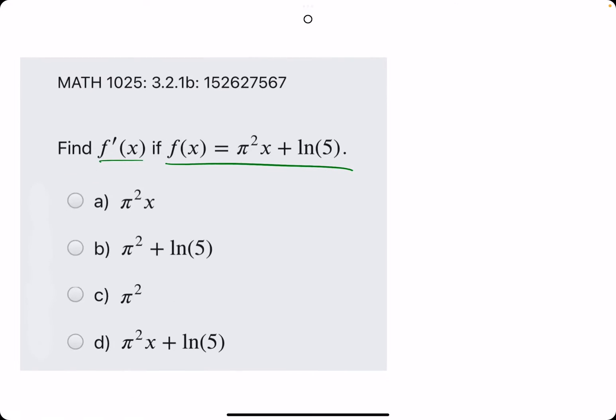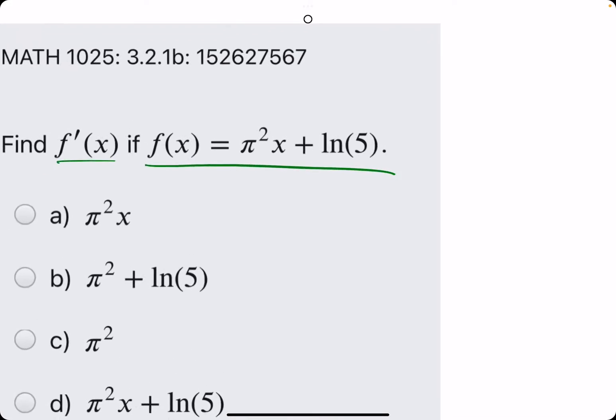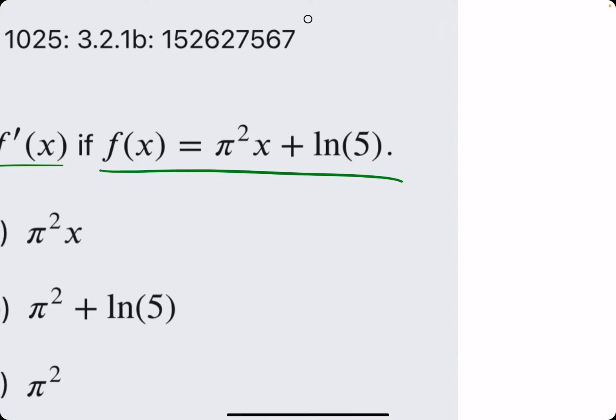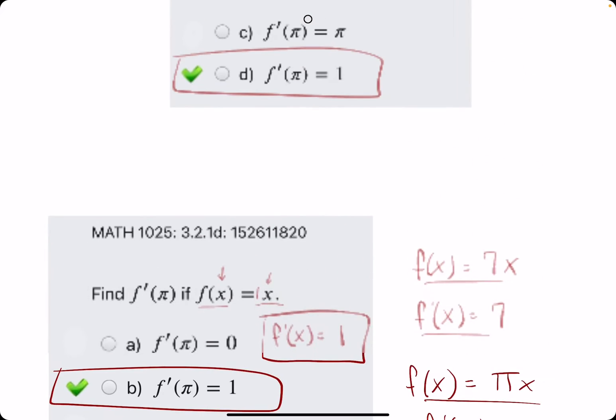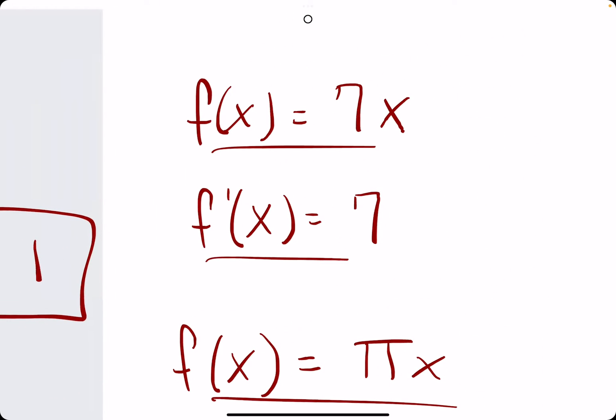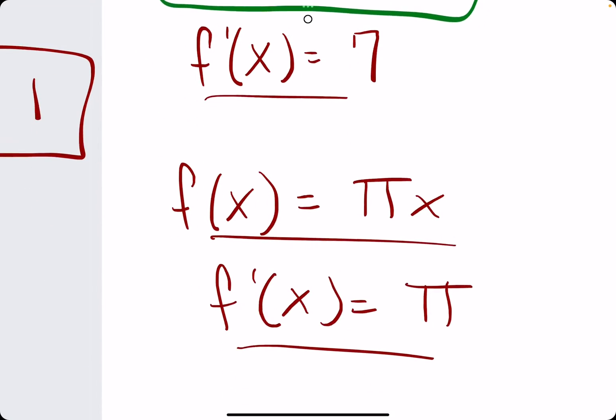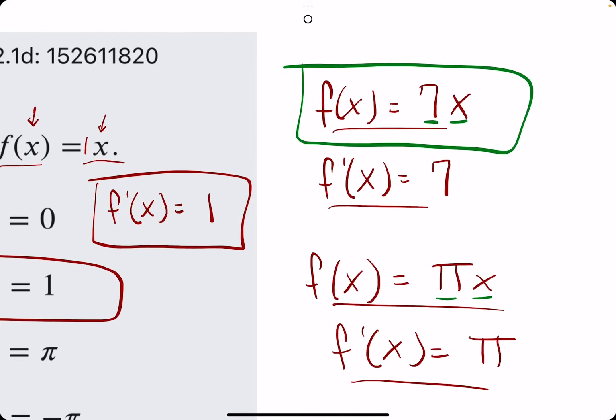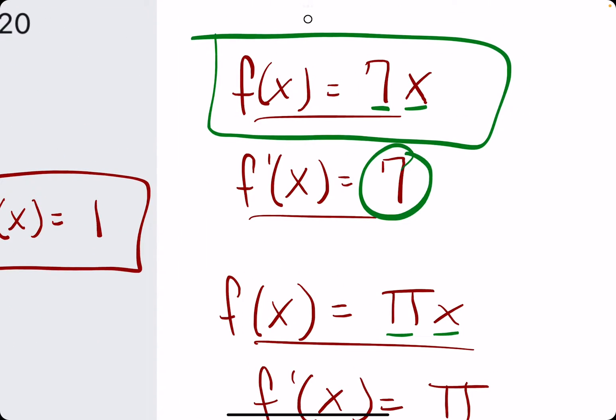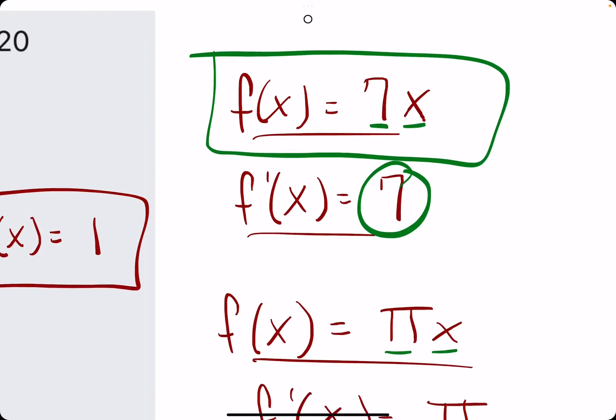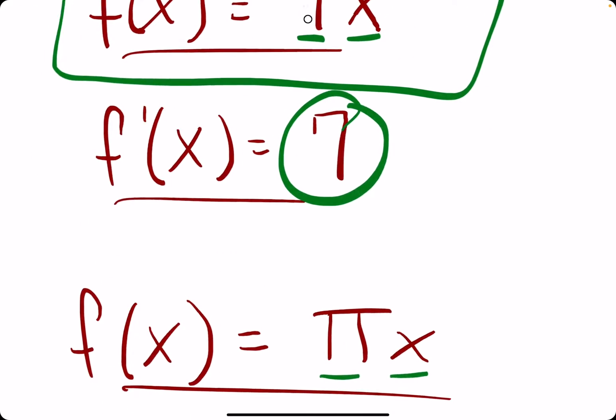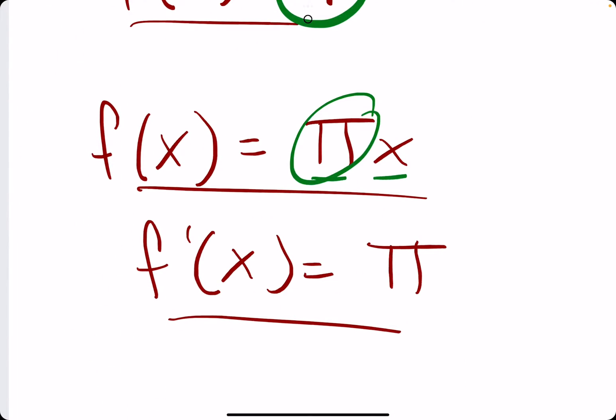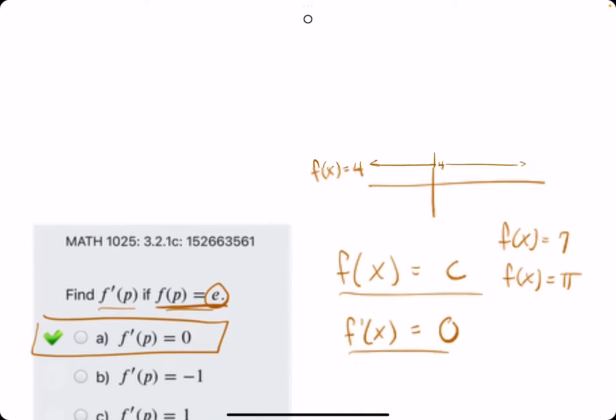This looks insane but let's simplify really what we're looking at. We talked about briefly in one of the other problems that whenever we have the derivative of some function that's just a constant times x, so 7x, π times x and so on, the derivative is just the coefficient in front of that x term. So 7x has a derivative of 7, π x has a derivative of π and so on.